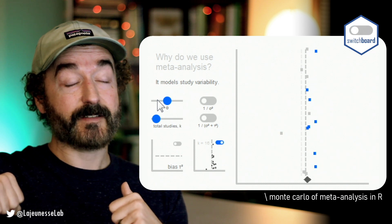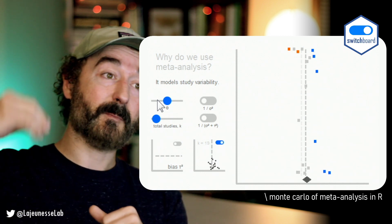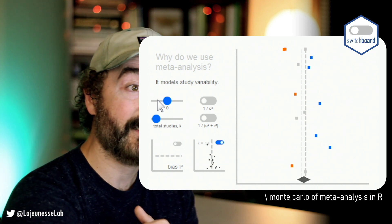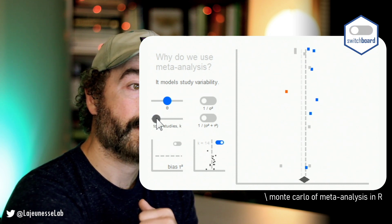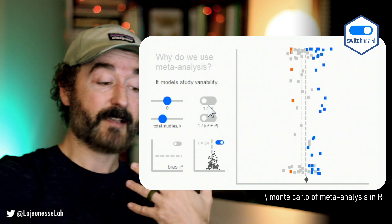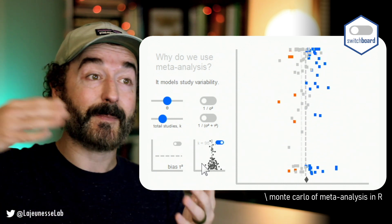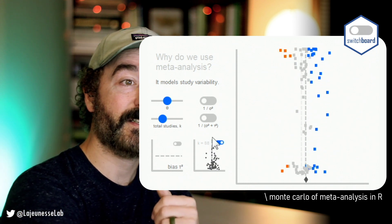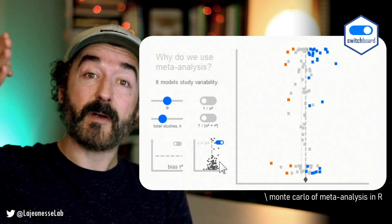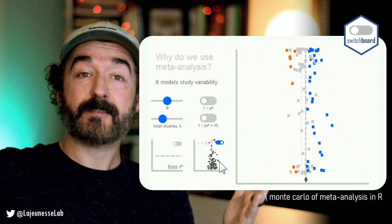The meta-analyst makes use of this and converts this variability into weights, with the goal to give more weight to studies with larger sample sizes compared to studies with small sample sizes. I'm blowing up the number of effects in the simulation so you can see the funnel shape: studies with small sample sizes tend to be more variable in what they estimate — they may over or underestimate the underlying effect — whereas studies with large sample sizes tend to converge on the true underlying effect. So we want to give those ones more weight in our synthesis because they provide better evidence.